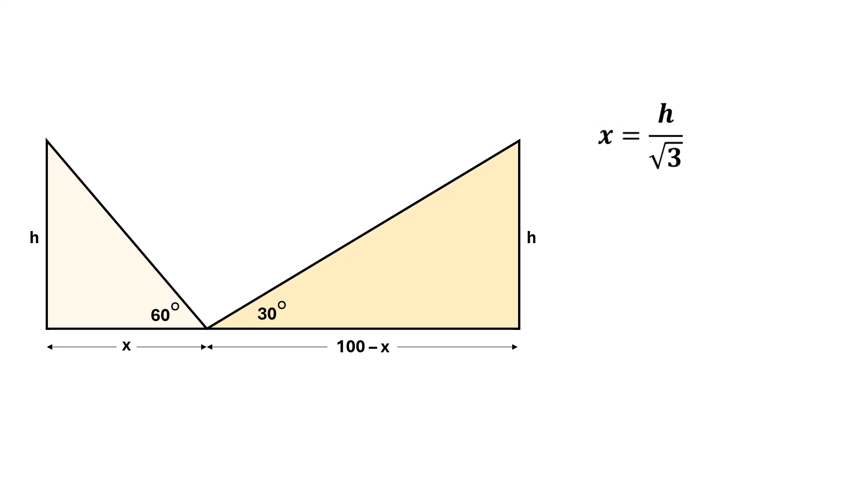Again, from this yellow triangle, we can write, tan 30 degrees equals h over 100 minus x. Substituting the value of tan 30 degrees, we can rewrite it as 1 over square root of 3 equals h over 100 minus x.